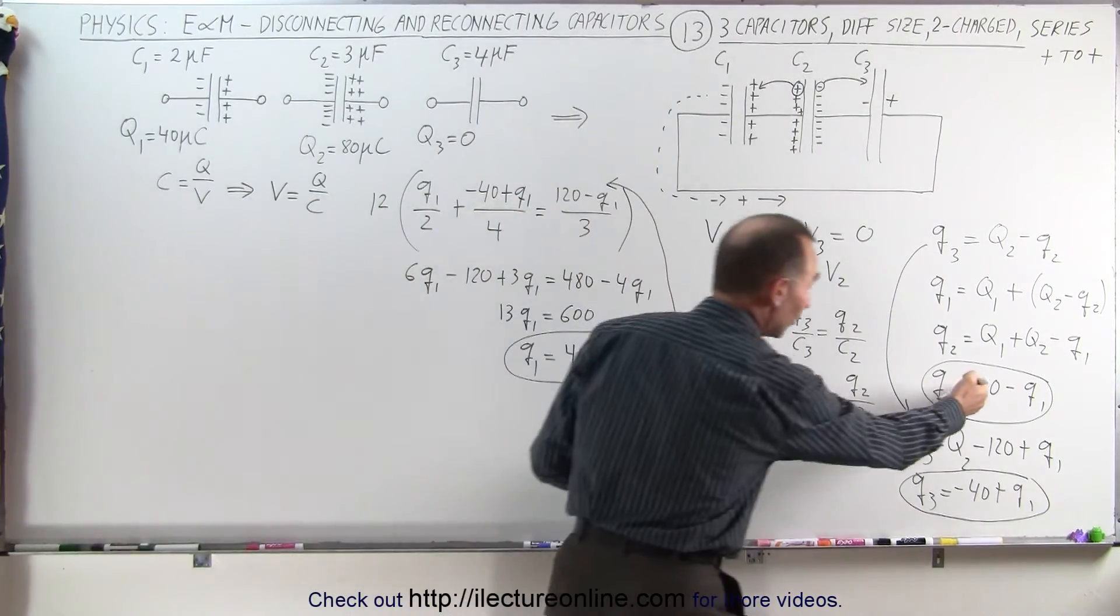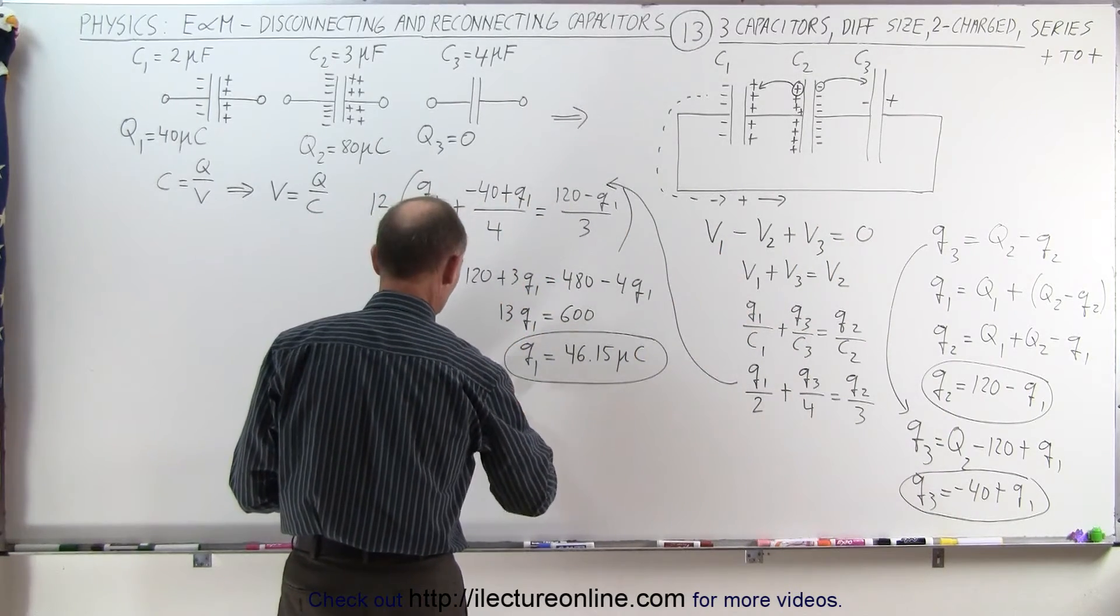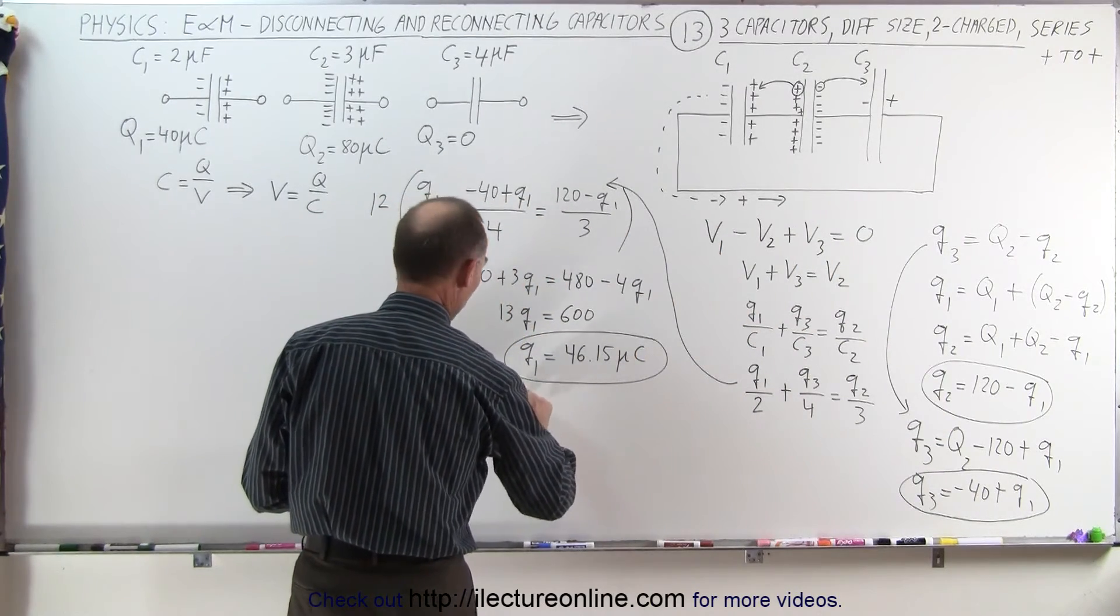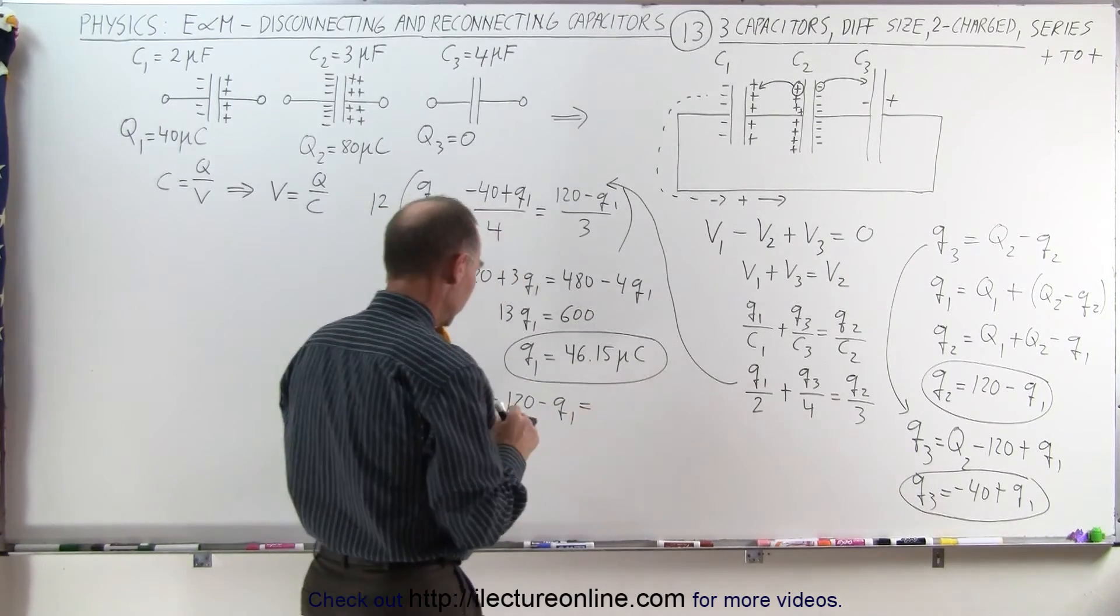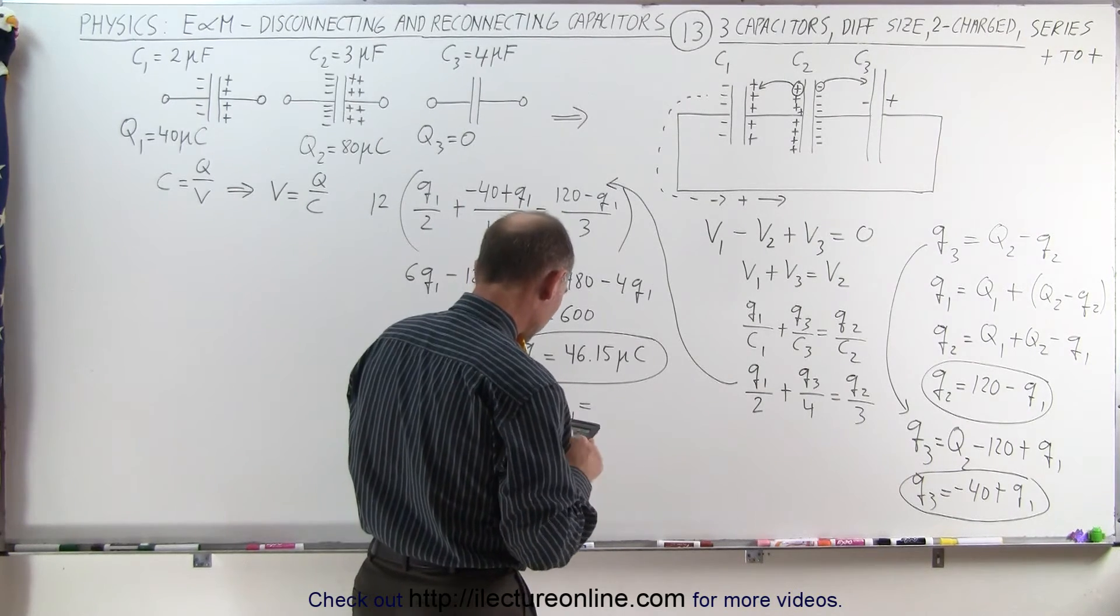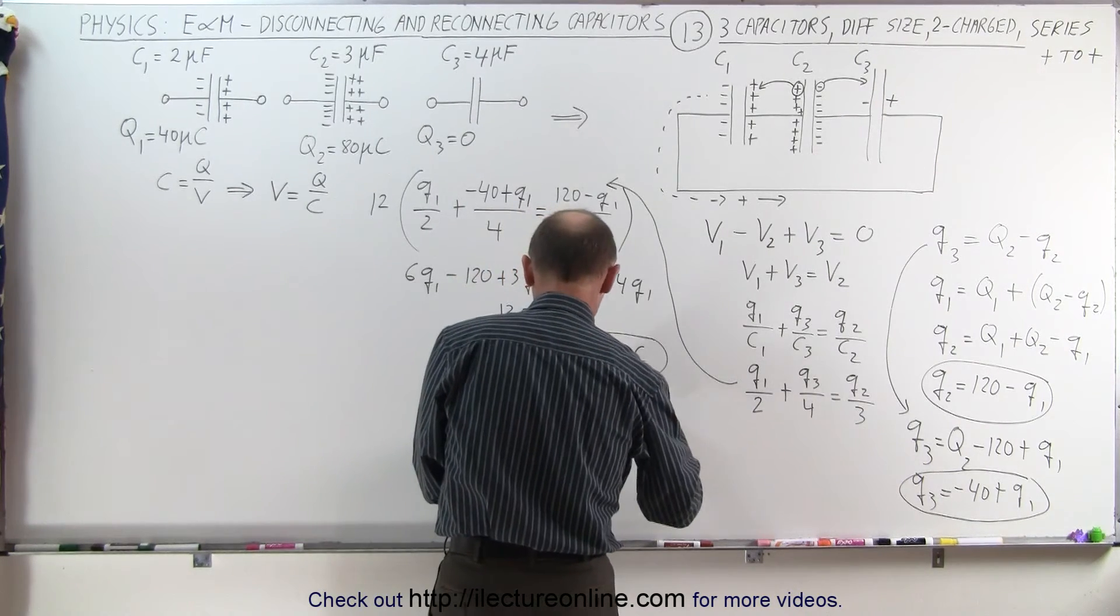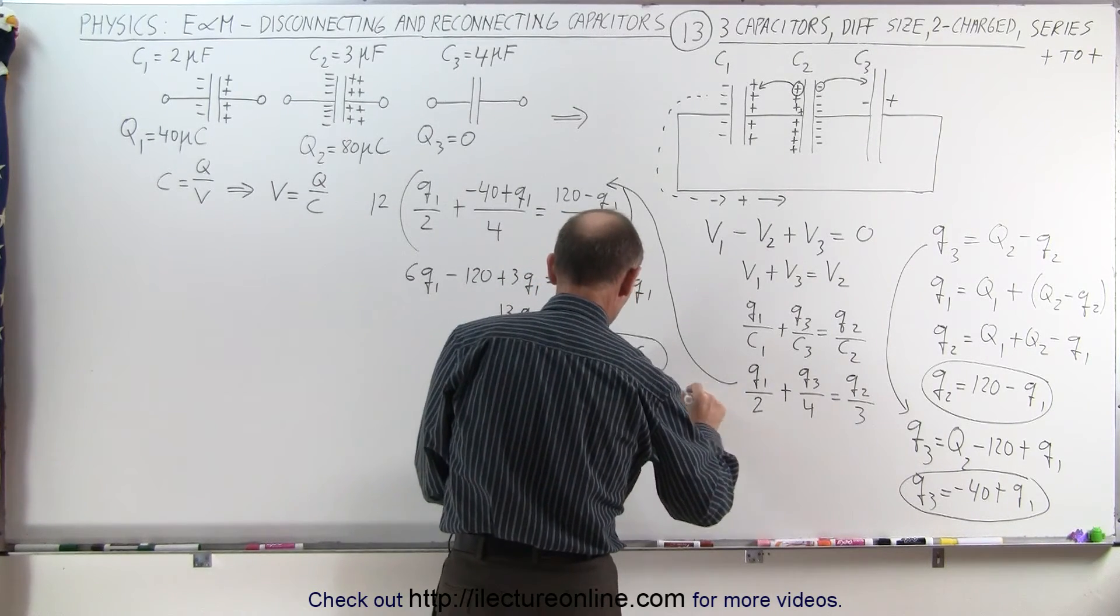Now since we have these handy equations, let's figure out what we have on the second capacitor and the third capacitor. Q2 is equal to 120 minus Q1. So 120 minus Q1 minus, plus 120 equals, that would be 73.85 microcoulombs.